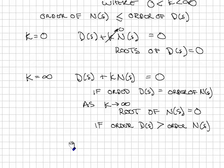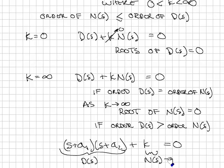For example, what if my polynomial looks like this? (s plus a1) times (s plus a2) plus k equals 0. Here is a polynomial, D(s). Here is a polynomial, N(s). In this case, N(s) is just equal to 1. It's a very simple polynomial, and the order of N(s) is 0. The order of D(s) is 2.